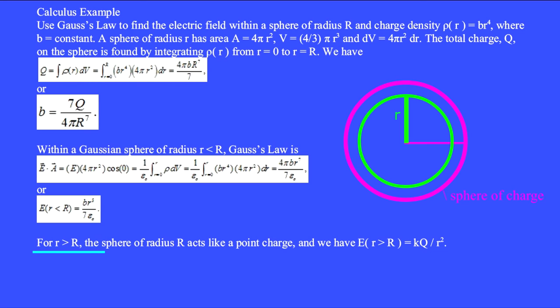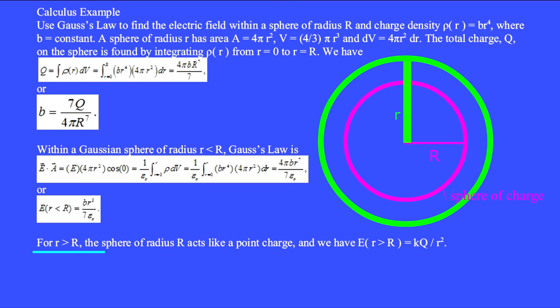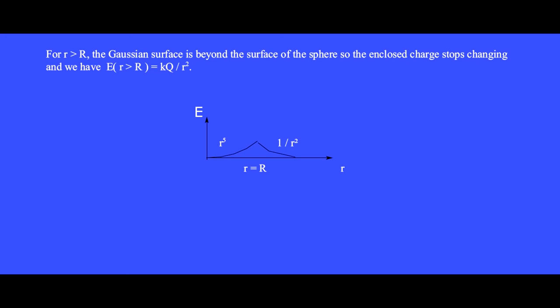When the radius of the Gaussian sphere little r is larger than big R, the sphere of radius R acts like a point charge, and we have E equals kQ over r squared, where Q is the total charge found above. Within the sphere the electric field grows as r to the fifth, but beyond the surface of the sphere the electric field decreases as 1 over r squared.